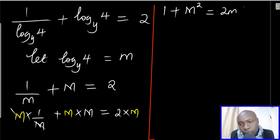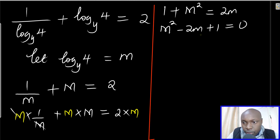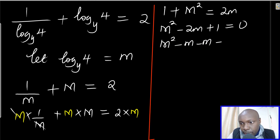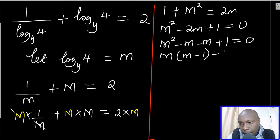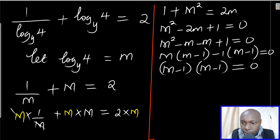Organizing this, you can see it forms a quadratic equation: m squared minus 2m plus 1 equals 0. Using factorization — look for two numbers whose product is 1 and sum is negative 2 — you get m squared minus m minus m plus 1 equals 0, which factorizes as (m minus 1)(m minus 1) equals 0. Both factors give m minus 1 equals 0, therefore m equals 1.